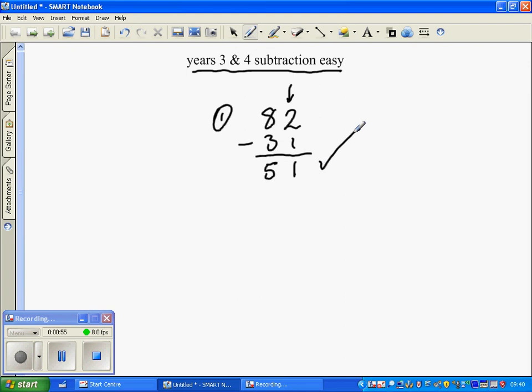Let's have a look at number two. Number two is 48 subtract, or take away, 43. We could quite easily do that in our heads, but we want to get used to doing this method.